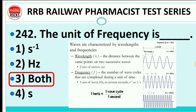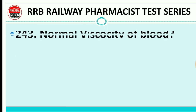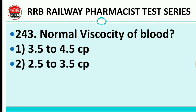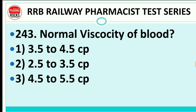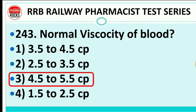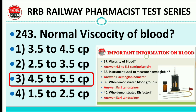Question 243: Normal viscosity of blood — 3.5 to 4.5 centipoise, 2.5 to 3.5 centipoise, 4.5 to 5.5 centipoise, or 1.5 to 2.5 centipoise? The right answer is 4.5 to 5.5 centipoise. Humne pehle blood ke upar ek video banaya tha; wahan se bhi aap blood-related questions solve kar sakte ho from our video list.